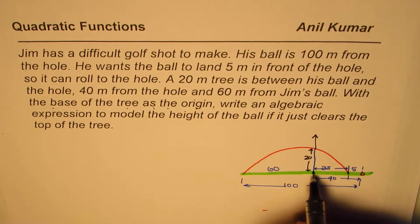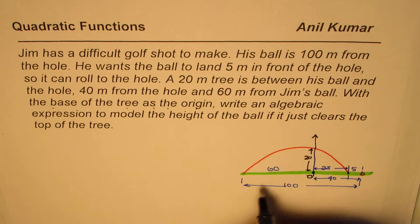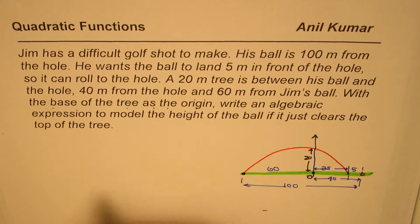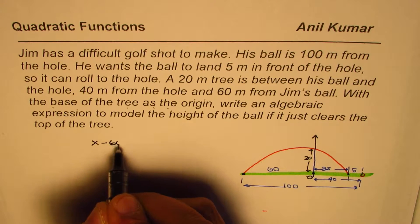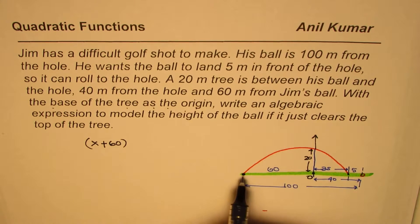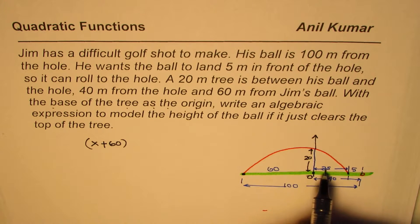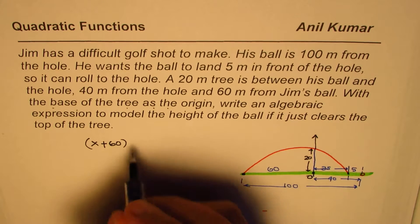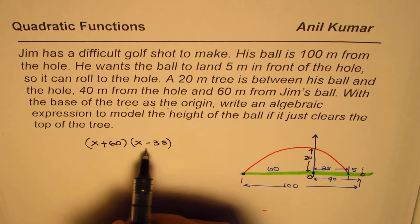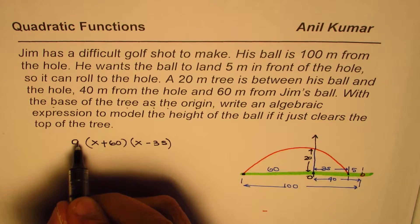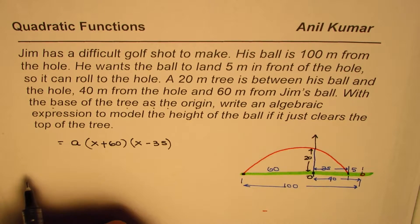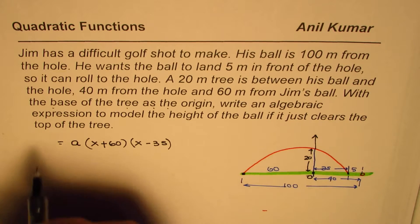If the base of the tree is the origin, let's call this point O. One of the x-intercepts is 60 to the left, so the factor is (x + 60) — putting x = -60 gives zero. The other zero is 35 to the right of the origin, so the factor is (x - 35). This gives a family of curves. Writing 'a' in front gives a specific parabola defining the projectile motion where the ball just clears the tree.